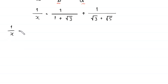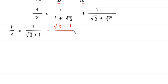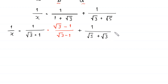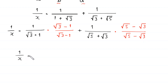So 1/x = 1/(1 + √3) + 1/(√3 + √5). For the first term, we note 1 + √3 = √3 + 1 and rationalize by multiplying numerator and denominator by (√3 − 1). For the second term, we rationalize 1/(√3 + √5) by multiplying by (√5 − √3).